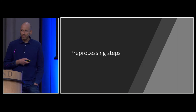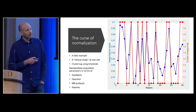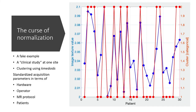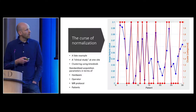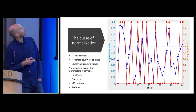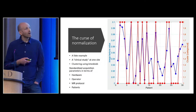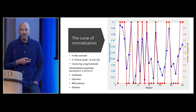Now, preprocessing steps. I will only talk about one type of preprocessing — normalization — which I think is the most interesting right now. There are of course more preprocessing steps to consider, such as ensuring image quality and proper co-registration. But I want to talk about what I call the curse of normalization, because this gave me some headache a while ago.